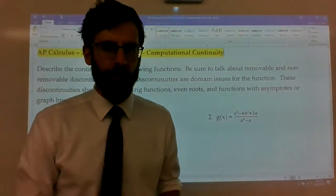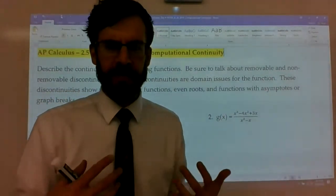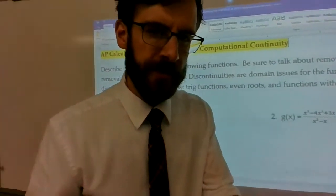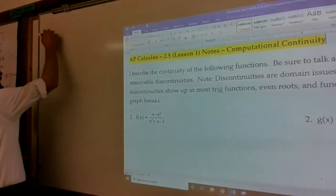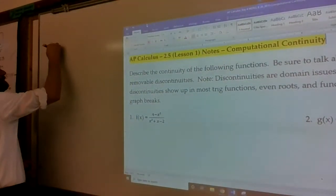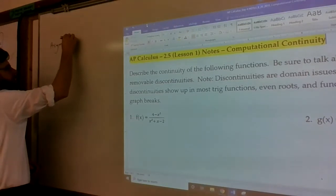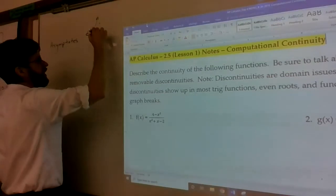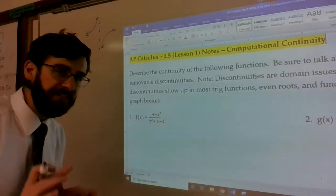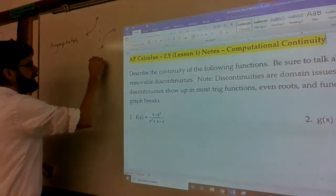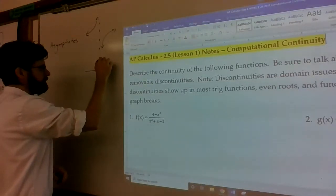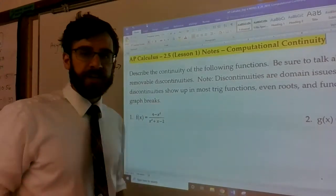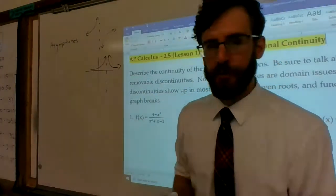You guys saw how graphs yielded different continuity values. Let me explain quickly. If you had asymptotes where curves would splinter off, or even asymptotes where curves would go in the same direction, we would consider those to be non-removable discontinuities.